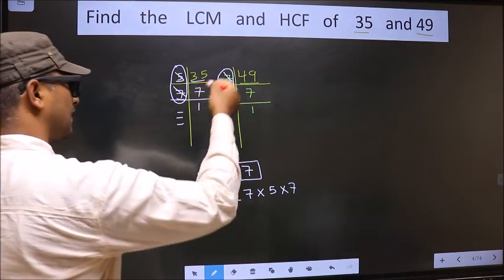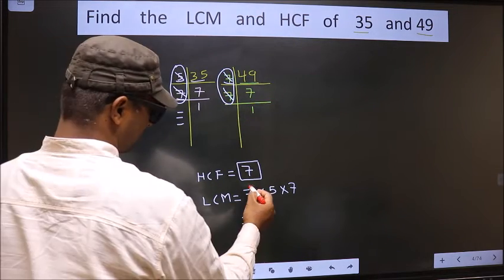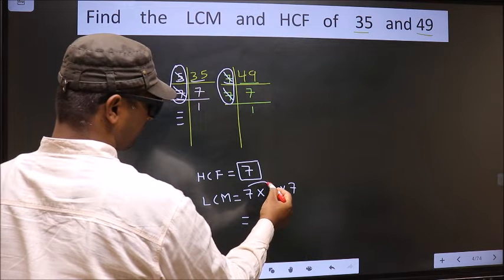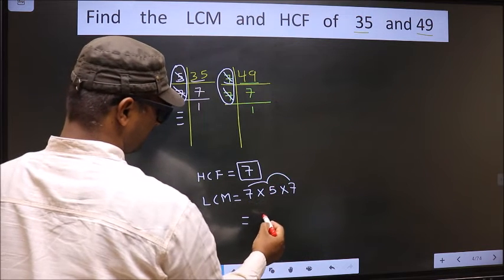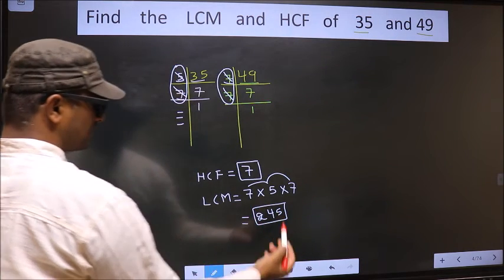Now each number has been cut. So our LCM is 7 times 5, 35 times 7, 245. So 245 is our LCM.